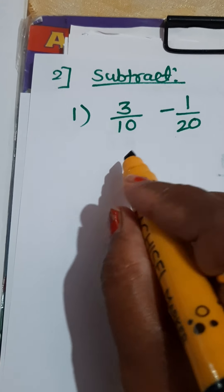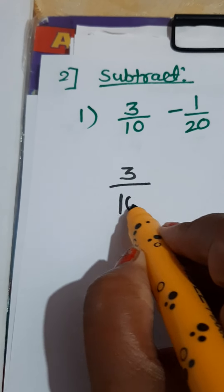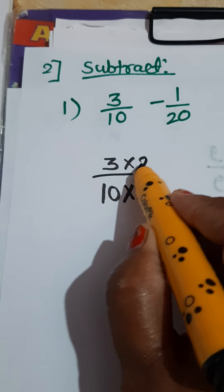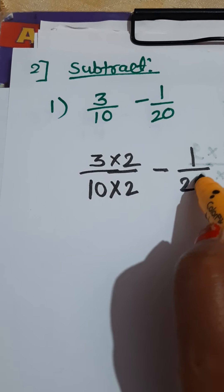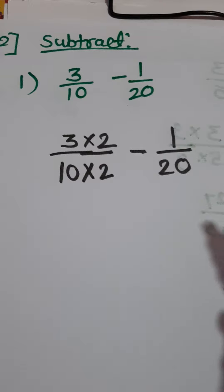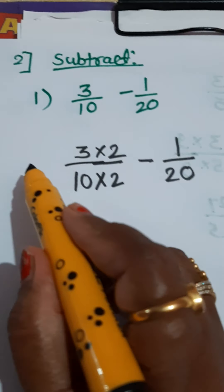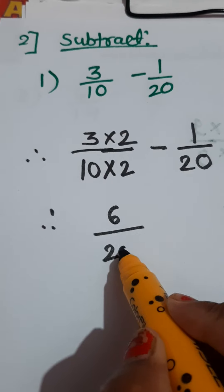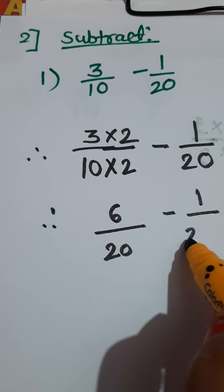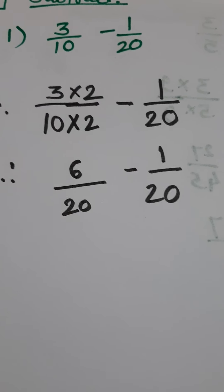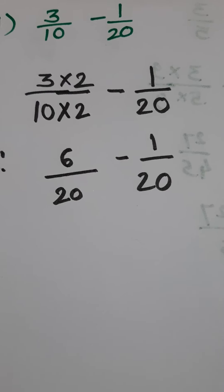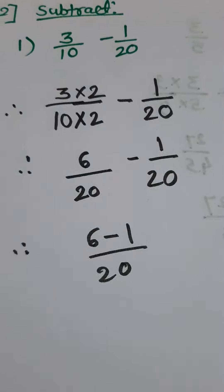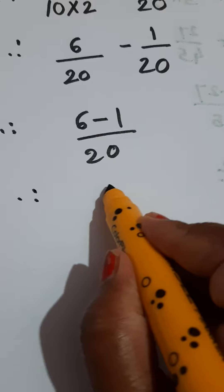Write down the first fraction as it is: 3 upon 10. We want 20 here, so multiply the fraction by 2 — meaning the whole fraction, numerator as well as denominator. Write down the second fraction as it is. Now: 3 twos are 6, 10 twos are 20, minus 1 upon 20. Now they are like fractions, so easily we can subtract the numerators. Therefore, 6 minus 1 upon 20. 6 minus 1 is 5.